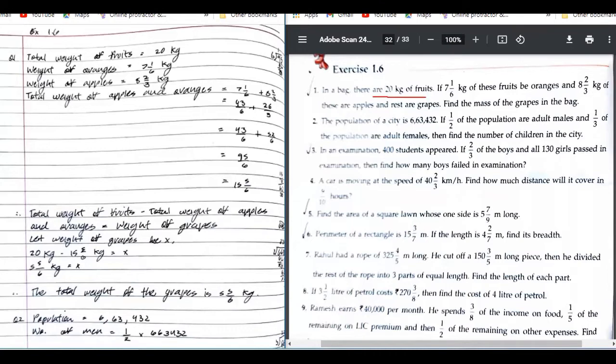Eight two by three kg of apples, and rest are grapes. This line is important: the rest are grapes. Find the mass of grapes in the bag. A very simple question. Total weight 20 kg, weight of oranges 7 1/6 kg, weight of apples.